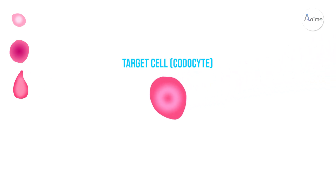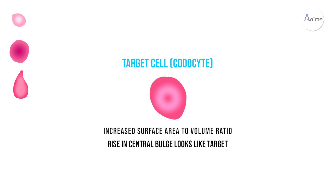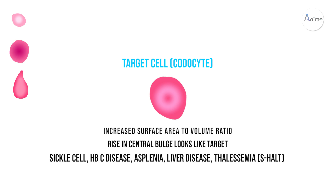The next RBC morphology is target cell, which is also called codocyte. In this RBC there is increased surface area to volume ratio, meaning that the volume of RBC is the same but the surface area of the RBC membrane is increased. So there is a rise of central bulge in this RBC, so this is called target or bull's eye RBC. It is found in sickle cell, HbC disease, asplenia, liver disease, and thalassemia. You can remember these by the mnemonic HALT.